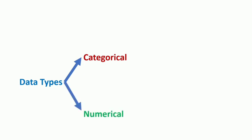Now let us look at the type of data. Data is classified into two main groups: categorical data and numerical data.